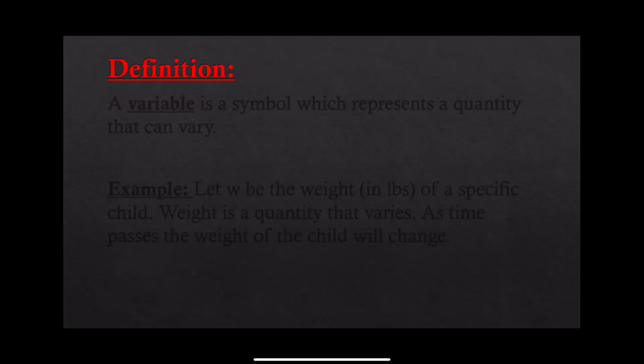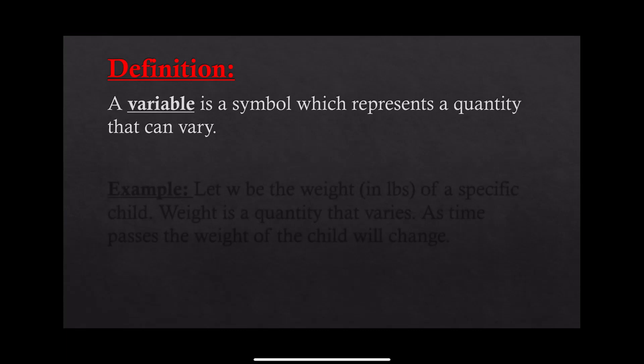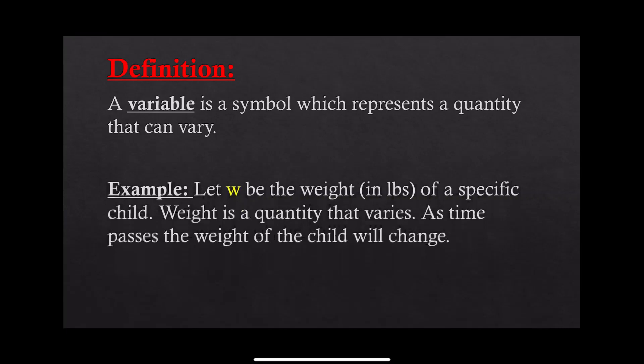We will now define variables. A variable is a symbol which represents a quantity that can vary. For a simple example, let w be the weight of a specific child. We know that weight is a quantity that varies because as time passes the weight of the child will change. So we consider weight as a variable, represented by the symbol w.